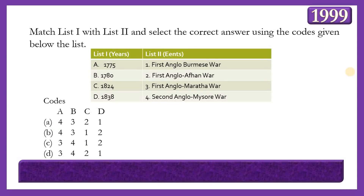Next matching question: Match years with events. List 1: 1775, 1780, 1824, 1838. List 2: First Anglo-Burmese War, First Anglo-Afghan War, First Anglo-Maratha War, Second Anglo-Mysore War. The answer is option C — 3, 4, 1, 2 — meaning the First Anglo-Burmese War was in 1824; the First Anglo-Afghan War was in 1838-1842; the First Anglo-Maratha War was in 1775-1782; and the Second Anglo-Mysore War was in 1780-1784.